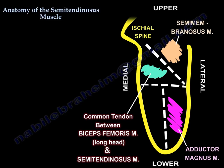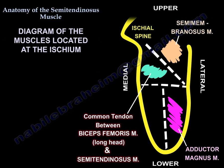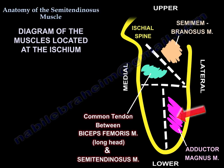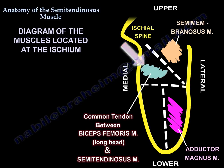Here you find a diagram of the ischium and the origin and location of the muscles at the ischium. Here you find the semimembranosus, the ischial part of the adductor magnus, and the common tendon origin for the long head of the biceps femoris and the semitendinosus.